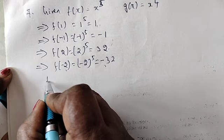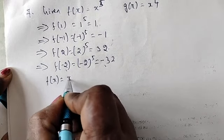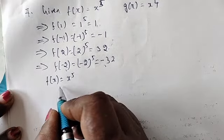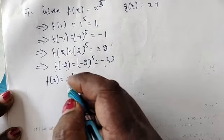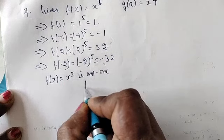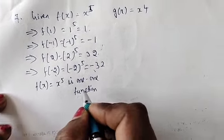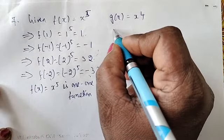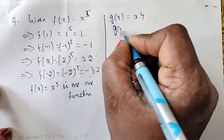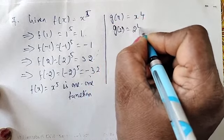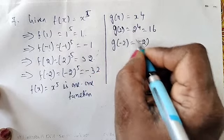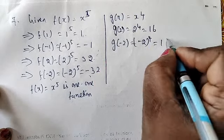So f(x) = x^5. Therefore, checking if f(x) = x^5 is 1-to-1: f(x) = x^5 is a 1-to-1 function.